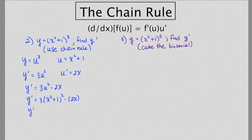Okay, and then we're just going to clean this up just a little bit, and we'll be done. So this is going to be 6x times x squared plus 1 squared. So this is our answer using the chain rule.